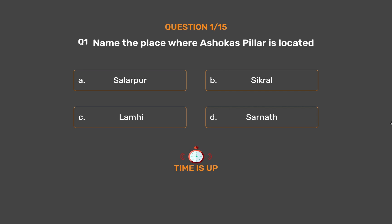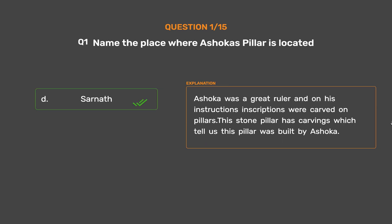The correct answer is Option D: Sarnath. Ashoka was a great ruler and on his instructions inscriptions were carved on pillars. The stone pillar has carvings which tell us this pillar was built by Ashoka.